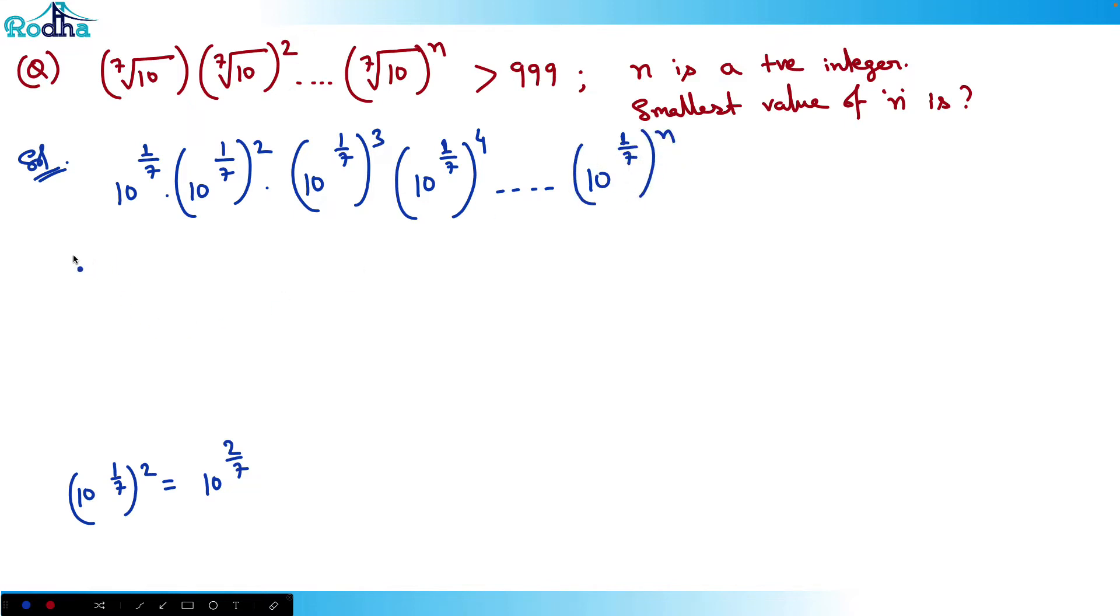So this actually becomes 10 raised to - now you can take the base as common. So base 10 is common. Now you can see 1/7, 2/7, 3/7, 4/7 like that. You can add these because a raised to m times a raised to n equals a raised to m plus n. So what happens is 10 raised to (1+2+3+4...+n) divided by 7 is greater than 999.